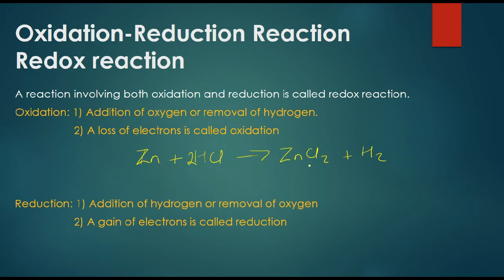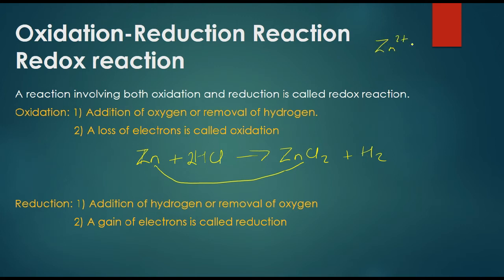ZnCl2 is the product here. Electrons are lost — the electrons are lost from Zn. ZnCl2 is formed. ZnCl2 carries a 2-minus charge, and Zn has a 2-plus oxidation state. These electrons are positive.